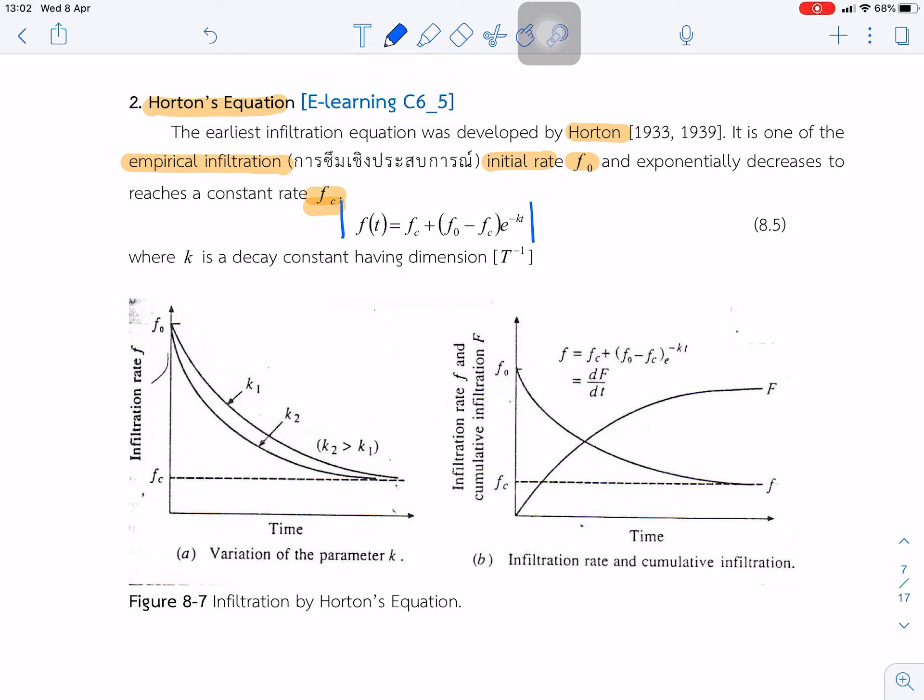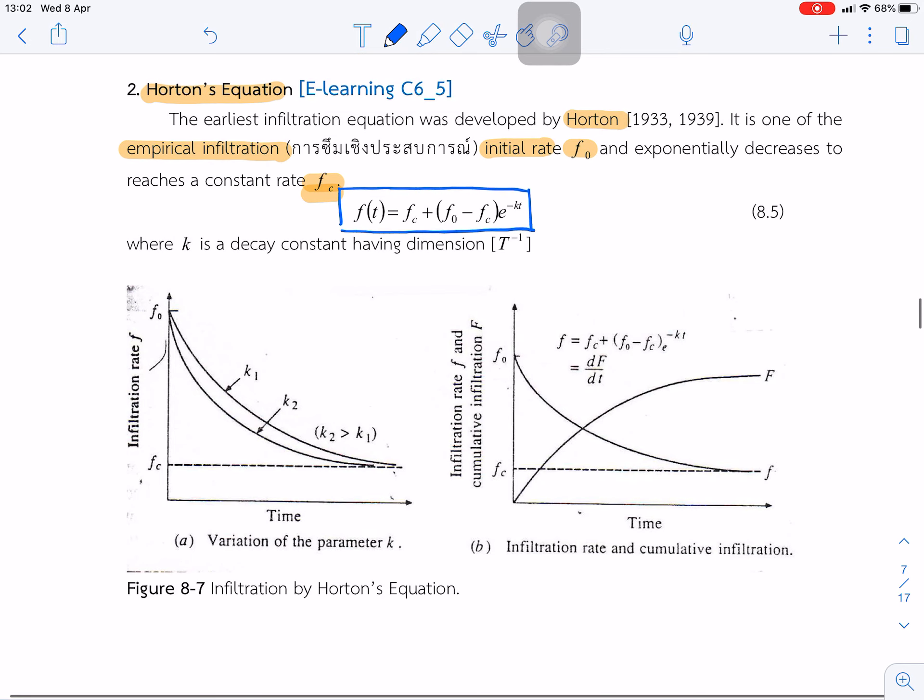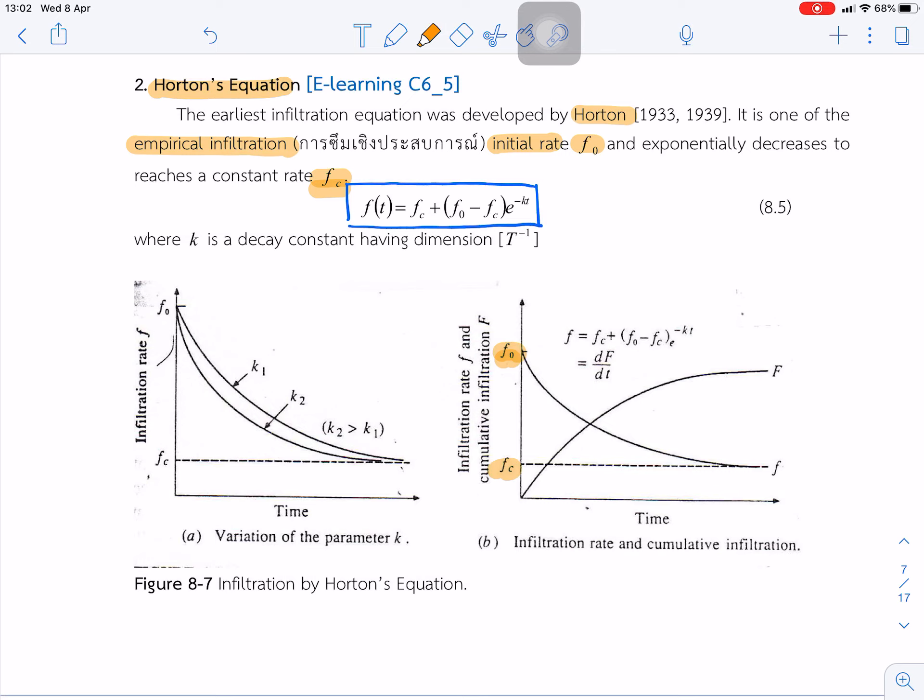You can see that it starts from F0 to Fc. K is a mean decay factor for K1 or K2.